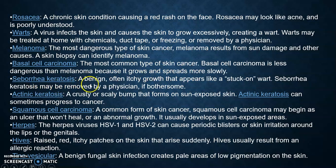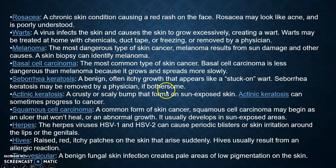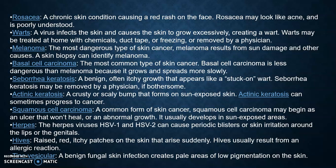Seborrheic keratosis is a benign, often itchy growth that appears like a stuck-on wart and may be removed by a physician if bothersome. Actinic keratosis is a crusty or scaly bump that forms on sun-exposed skin and can sometimes progress to cancer. Squamous cell carcinoma is a common form of skin cancer that may begin as an ulcer that won't heal or an abnormal growth, and it usually develops in sun-exposed areas.